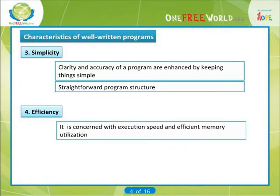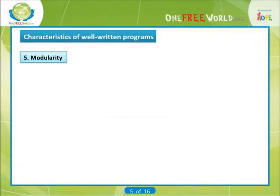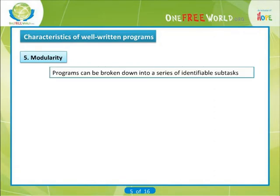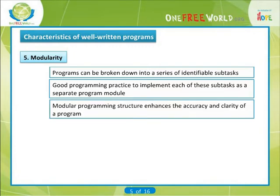These are generally important goals, though they should not be obtained at the expense of clarity or simplicity. Many complex programs require a trade-off between these characteristics. In such situations, experience and common sense are key factors. Modularity. Many programs can be broken down into a series of identifiable sub-tasks. It is good programming practice to implement each of these sub-tasks as a separate program module. In C, such modules are written as functions. The use of a modular programming structure enhances the accuracy and clarity of a program and it facilitates future program alterations.